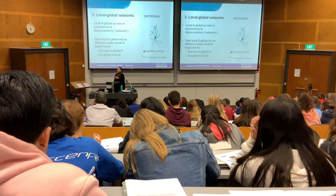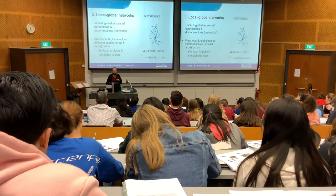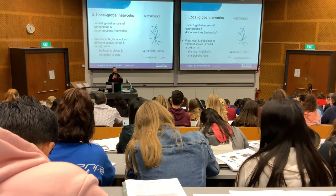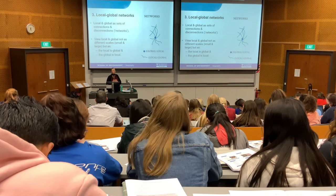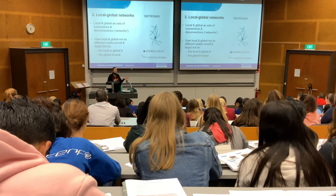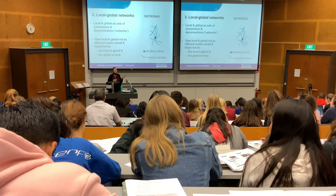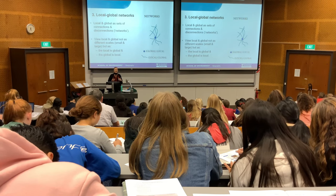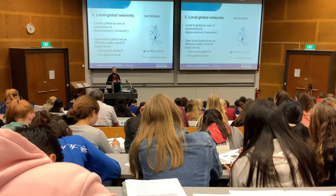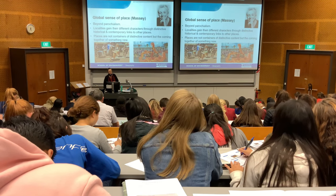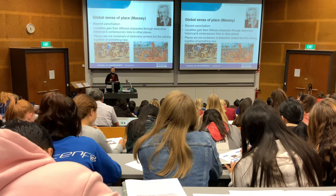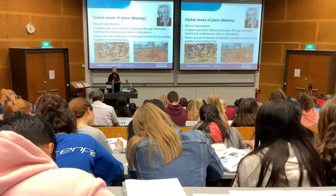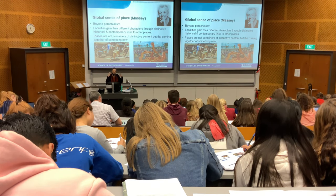The final concept: local and global as a set of connections and disconnections. We can argue that the global-local nexus is about networks — it's not local doing to global or global doing to local. The local is global, and the global is local. Something called actor network theory underpins this. Doreen Massey argued that we actually have a global sense of place. Even though we live locally, we need to think beyond parochialism or small-mindedness.